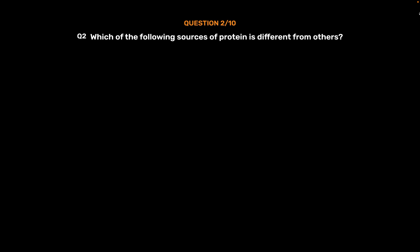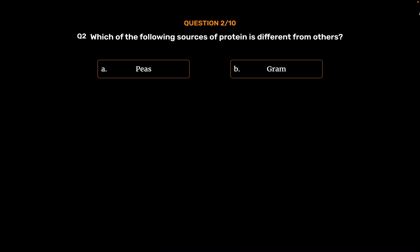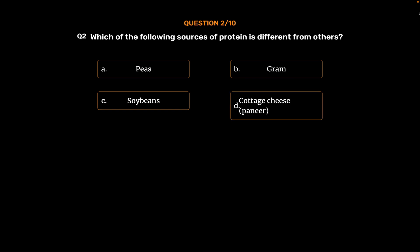Question number 2. Which of the following sources of protein is different from others? Option A: Peas. Option B: Gram. Option C: Soybeans. Option D: Cottage cheese (Paneer).